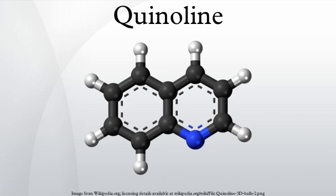Quinoline is a heterocyclic aromatic organic compound with the chemical formula C9H7N. It is a colorless hygroscopic liquid with a strong odor. Aged samples, if exposed to light, become yellow and later brown.